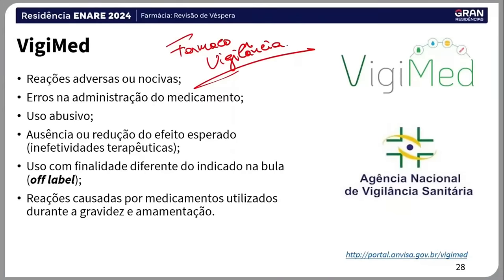Até 2018, notificar no Notivisa era trabalhoso e era só para profissionais de saúde e indústrias. O Vigimed ampliou o acesso. Quando notificar: reações adversas, erros na administração, uso abusivo de medicamentos dentro do ambiente hospitalar, ausência ou redução de efeito esperado de um medicamento. O off-label é uma prescrição ou uso fora daquilo que foi registrado para o medicamento. O registro de medicamento é feito aqui na Anvisa, nos EUA pelo FDA e na Europa pela EMA.